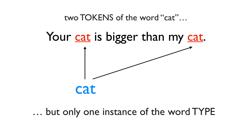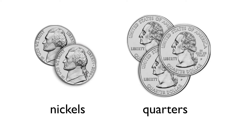The type-token distinction isn't anything esoteric — we use it all the time. If I've got two US nickels and three US quarters in my pocket, I've got five coins in total. That's five coin tokens. How many types of coins? Just two: nickels and quarters.